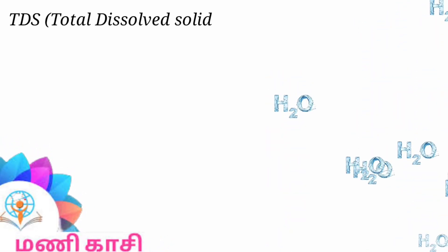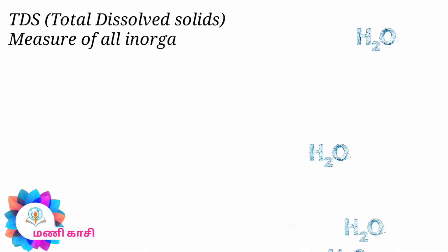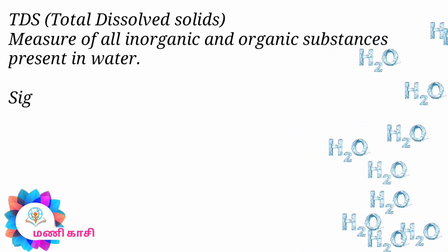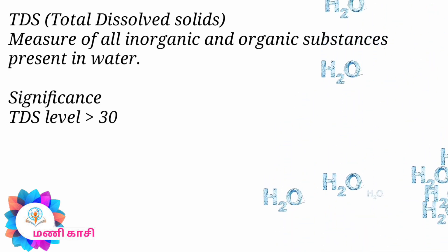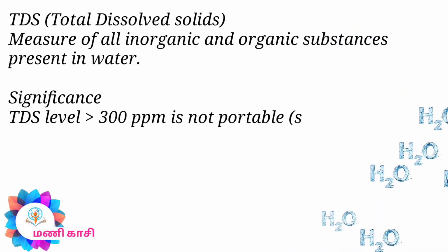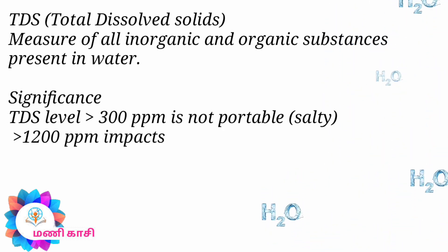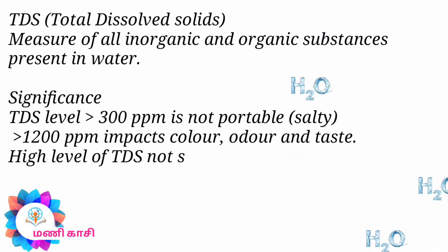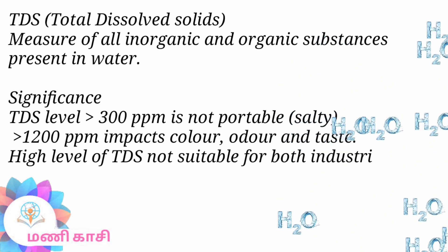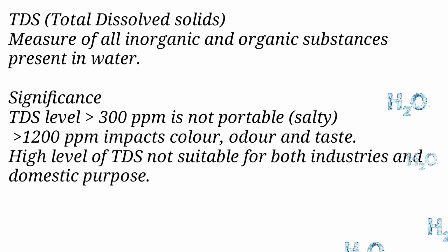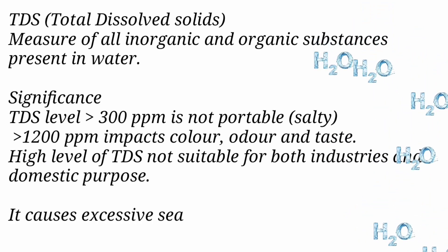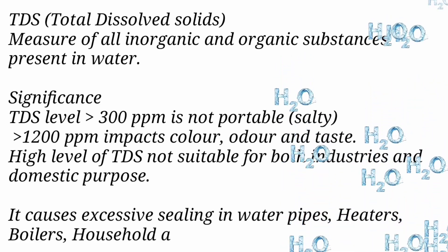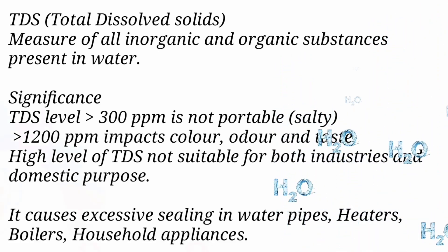TDS stands for Total Dissolved Solids. It is defined as the measure of all inorganic and organic substances present in water. Significance: TDS level greater than 300 ppm is not potable; greater than 1200 ppm impacts color, odor, and taste. High levels of TDS are not suitable for both industries and domestic purposes, and causes excessive scaling in water pipes, heaters, boilers, and household appliances.